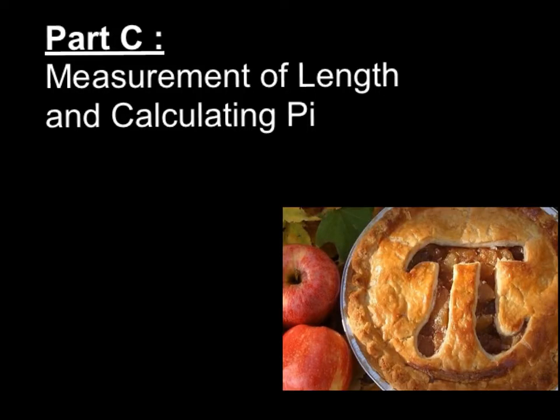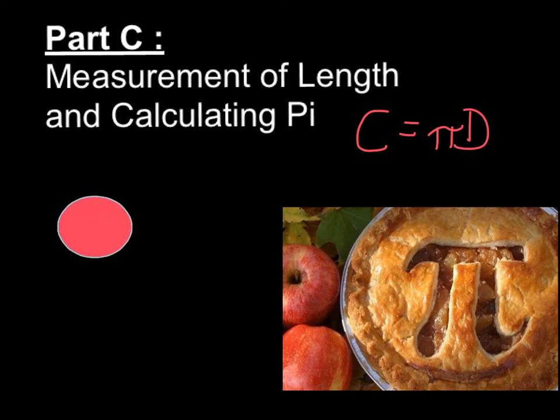Now we've come to the final part of our lab, where we're going to calculate pi and learn about the tools of measurement. The first thing is that the ratio between the circumference and diameter of a circle is pi. So if you have a circle, pi is just going to be the circumference, distance around, to the diameter, distance across.